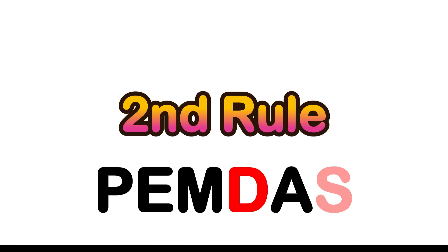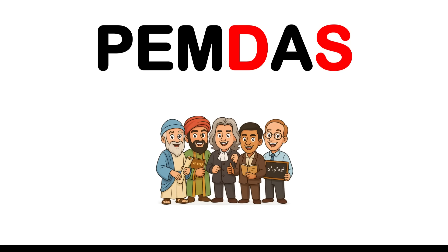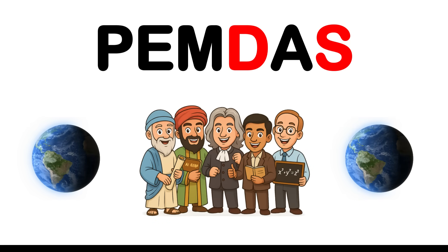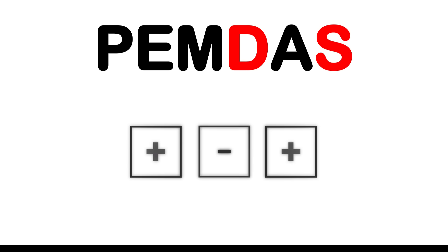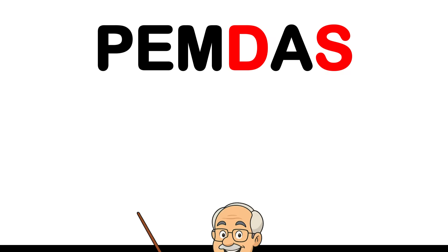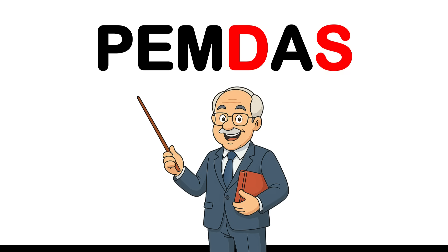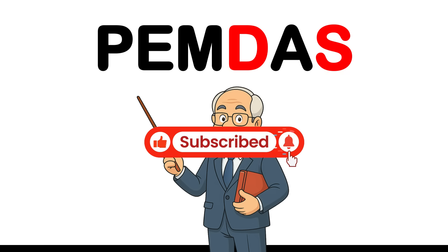Rule number two: the order of operations, PEMDAS. To avoid chaos in mathematics, mathematicians created a universal system—a fixed order that everyone must follow. This principle determines which operations take priority and must be performed first. If this is making sense so far and you're learning something new, take a second to hit the like button and subscribe.